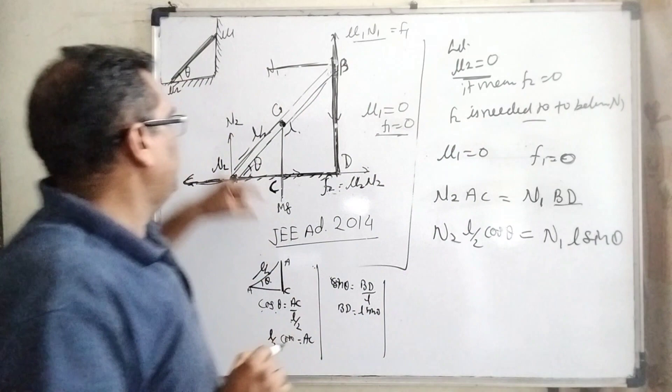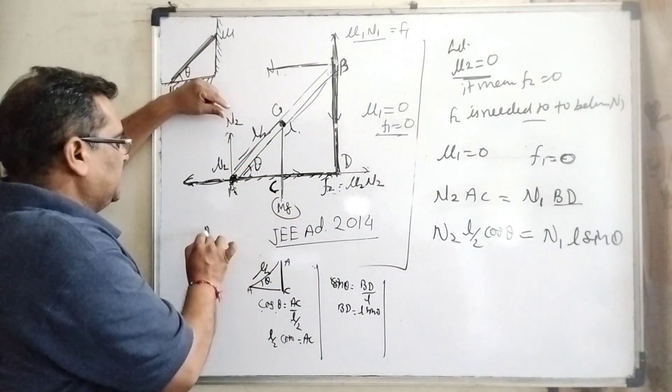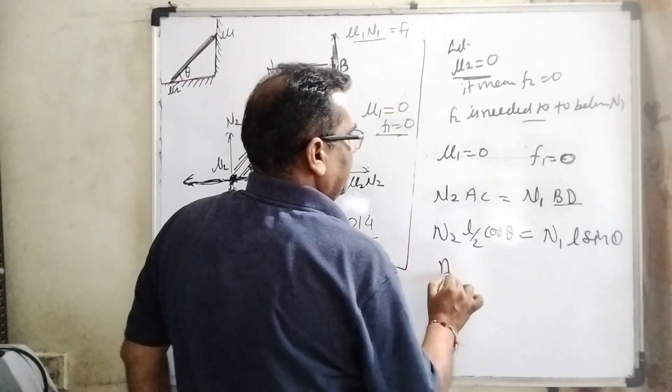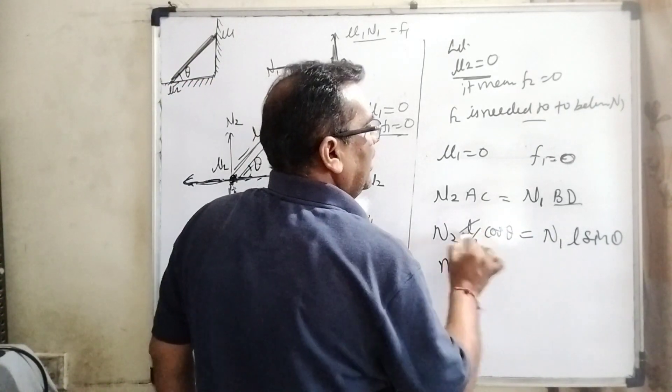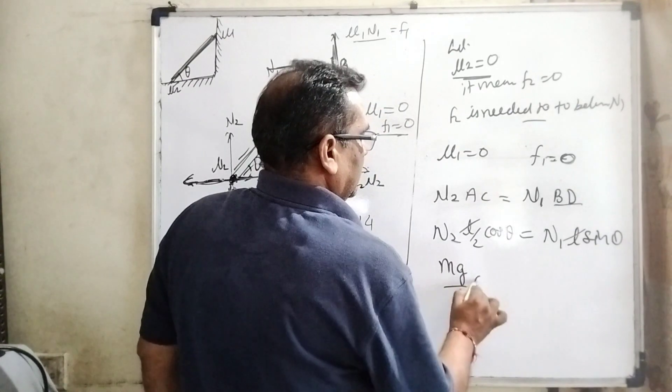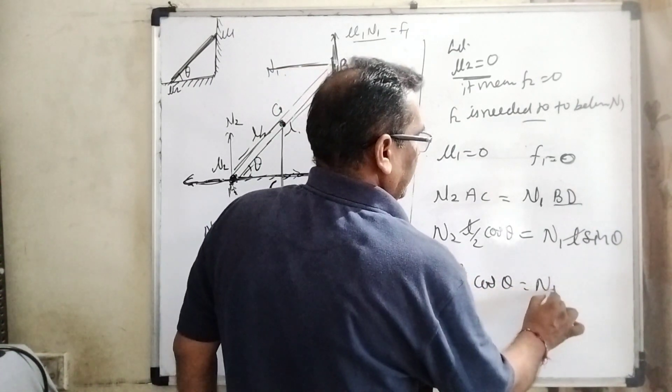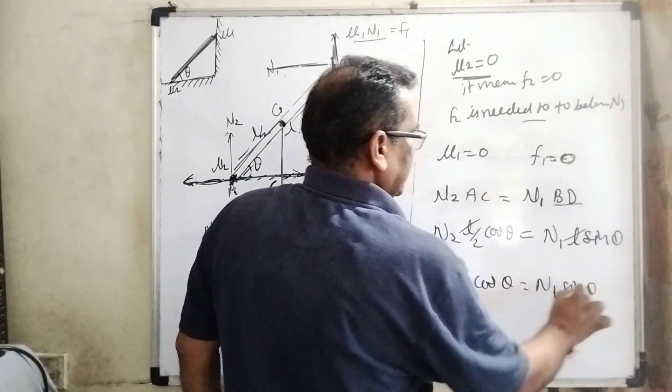You can see N2 and mg balance each other, means N2 equals mg. So now substitute mg. L cancels out. mg by 2 cos theta equals N1 L sin theta.